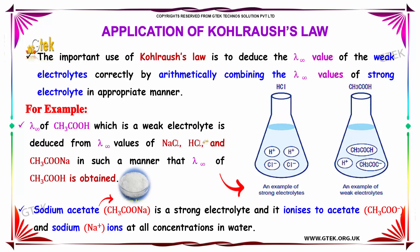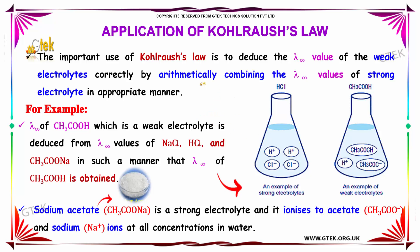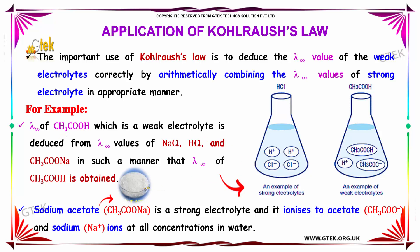The important use of Kohlrausch's law is to deduce the lambda infinity value of weak electrolytes correctly by arithmetically combining the lambda infinity values of strong electrolytes in an appropriate manner. For example, lambda infinity of CH₃COOH — that is acetic acid, which is a weak electrolyte — is deduced from the lambda infinity values of sodium chloride, hydrochloric acid, and sodium acetate.